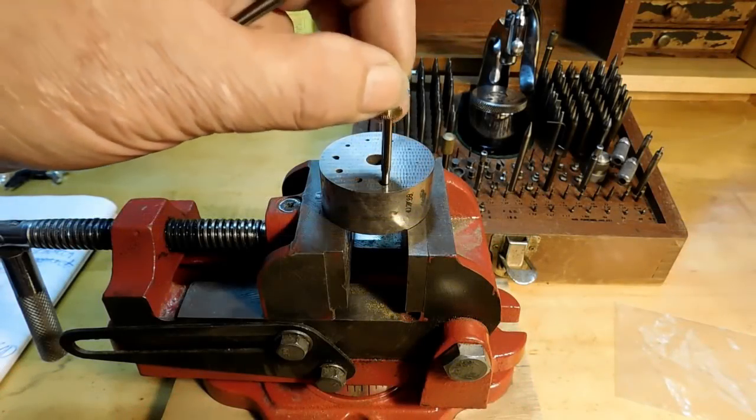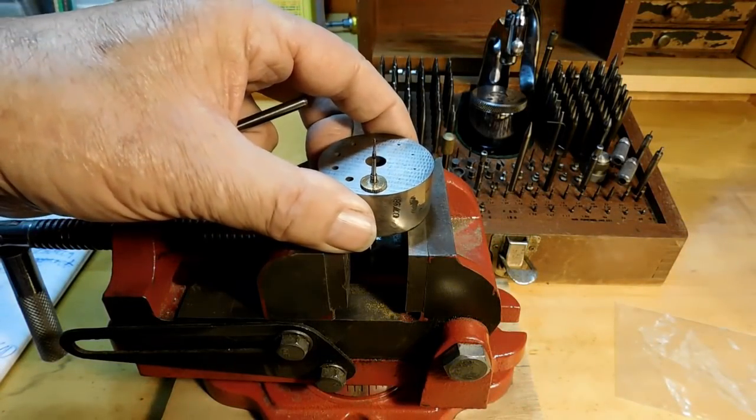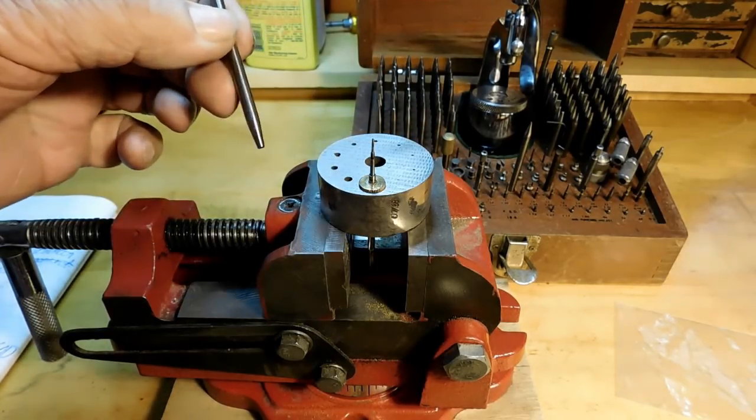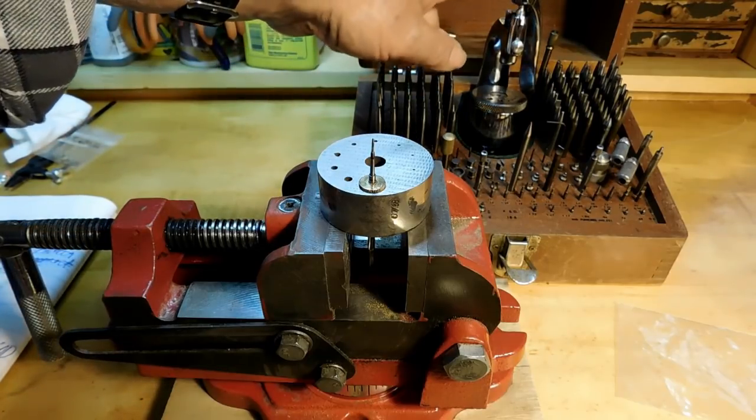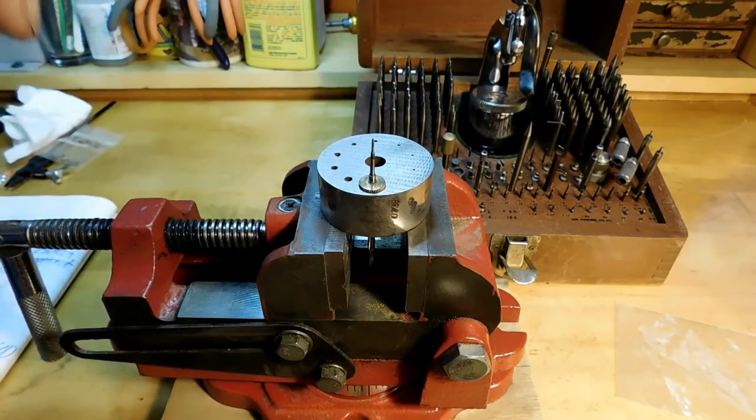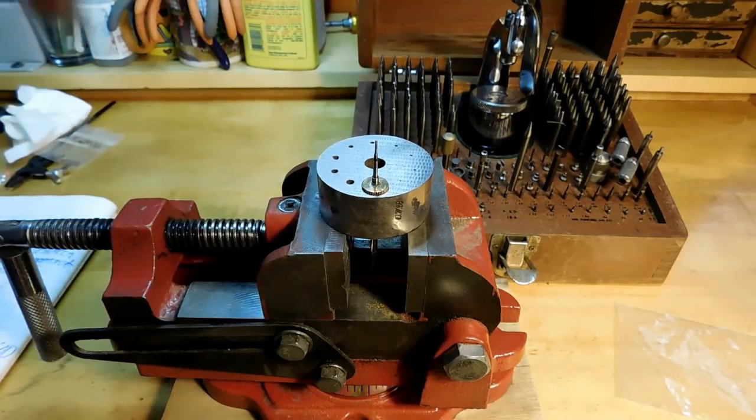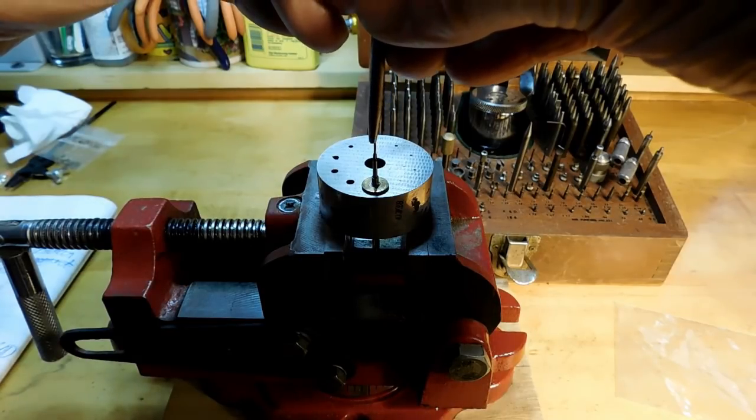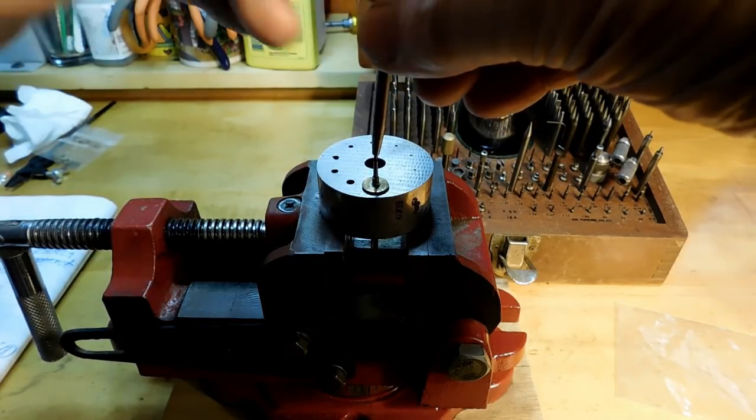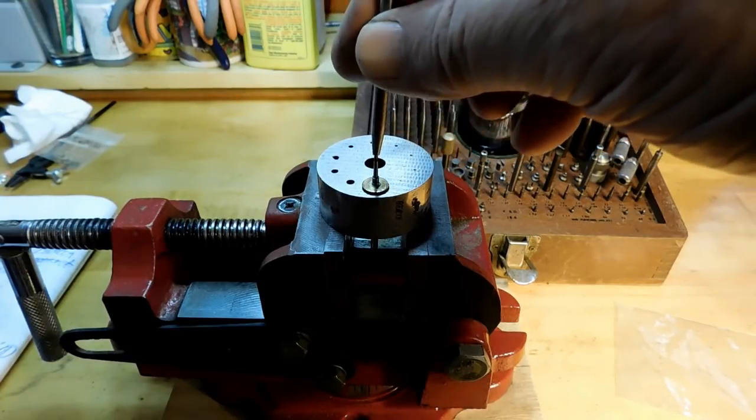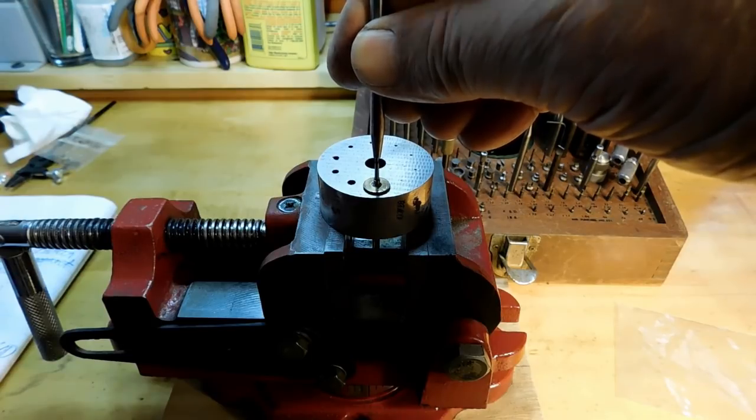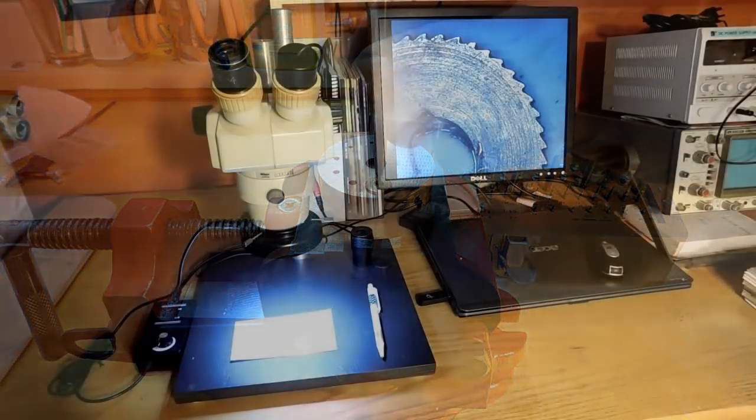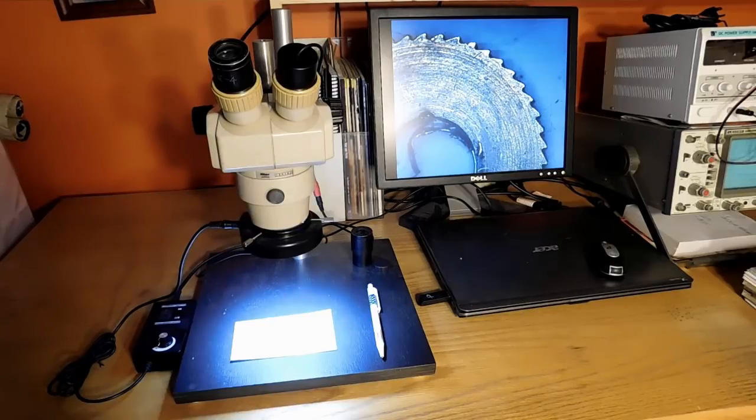This is the setup that we're going to use to remove the ratchet from the arbor here. We're going to use a stake from my watchmaker staking kit, but it's a little bit too big to put on the anvil here, so I've set up a little one that we can use. The stake fits right over the pivot and then we'll just tap it out of there. Now that we've got the ratchet off the arbor, I brought it over to the other side of the room where I have my microscope.